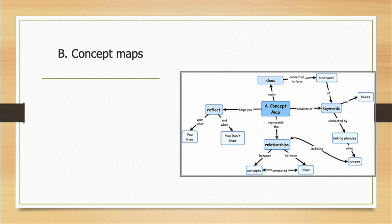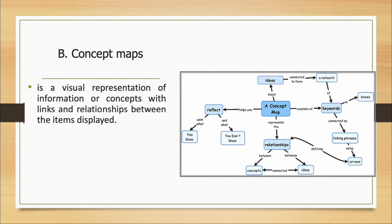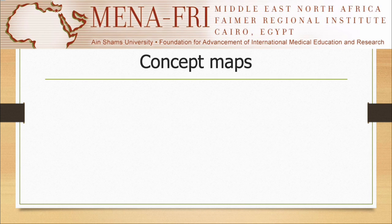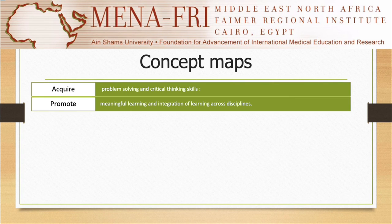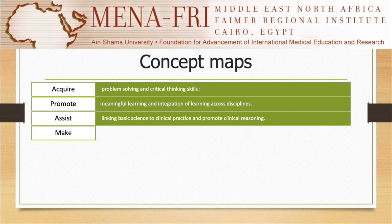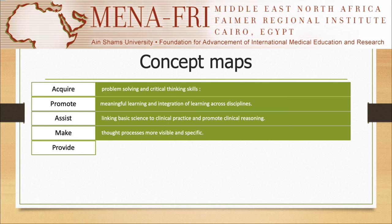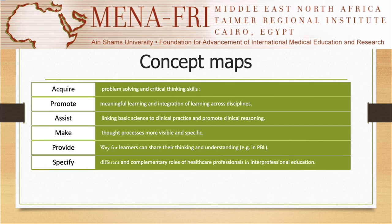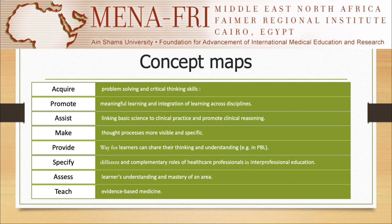The second method to make learning effective is through the use of concept maps. A concept map is a visual representation of information or concepts with links and relationships between the items displayed. The map shows a network of related concepts, and the learner thinks and learns by linking new concepts to what is already known, helping them see the pieces as part of a larger jigsaw. Concept maps help students acquire problem-solving and critical thinking skills, promote meaningful learning and integration across disciplines, assist in linking basic science to clinical practice, make thought processes more visible, and support interprofessional education and evidence-based medicine.